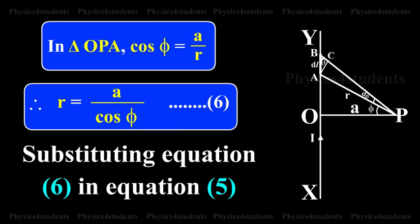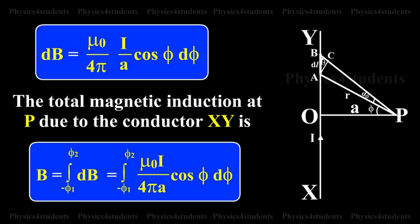Substituting equation 6 in equation 5, dB equals μ0 by 4π times I by A times cos φ dφ.